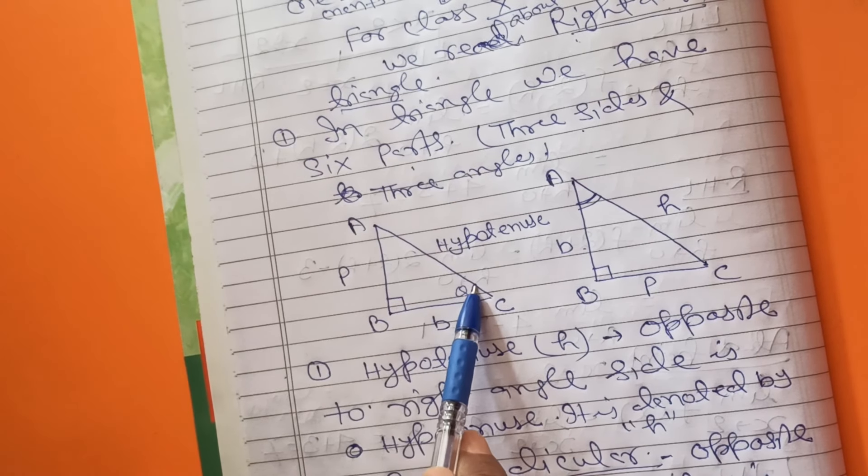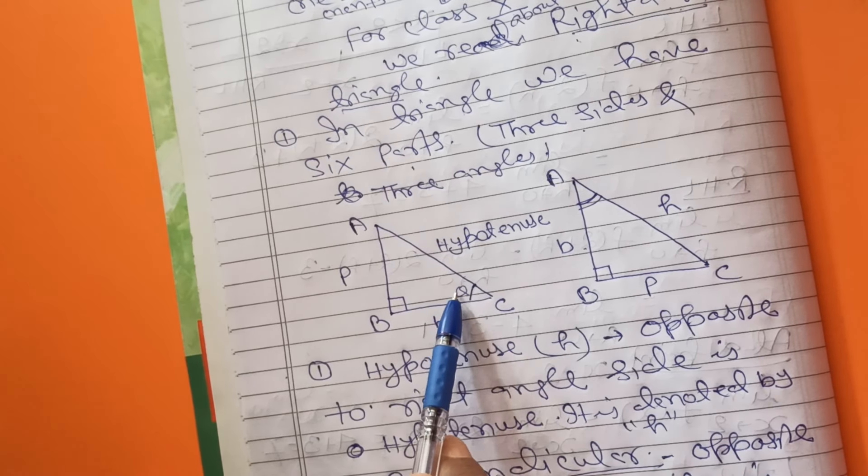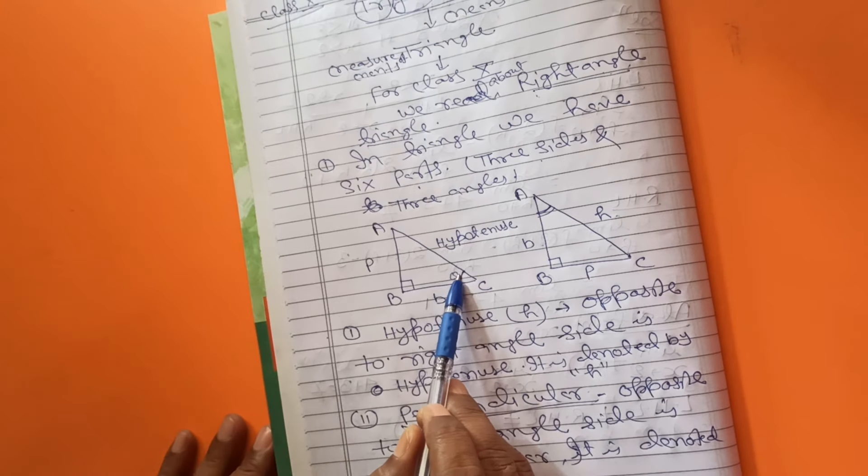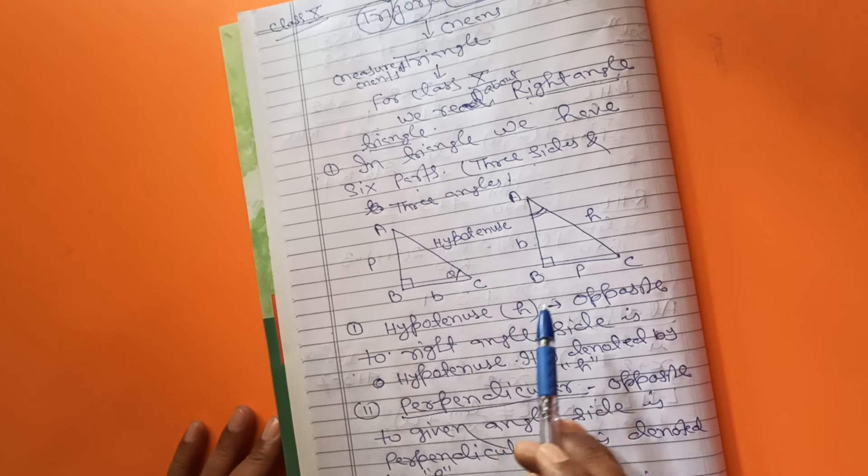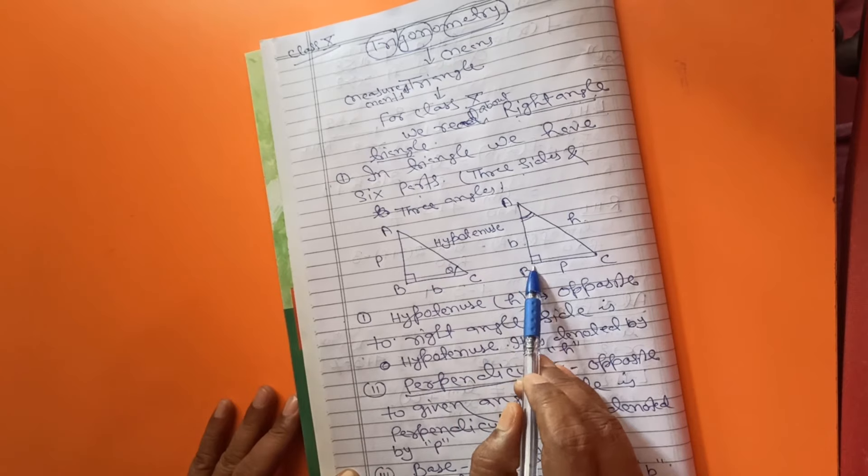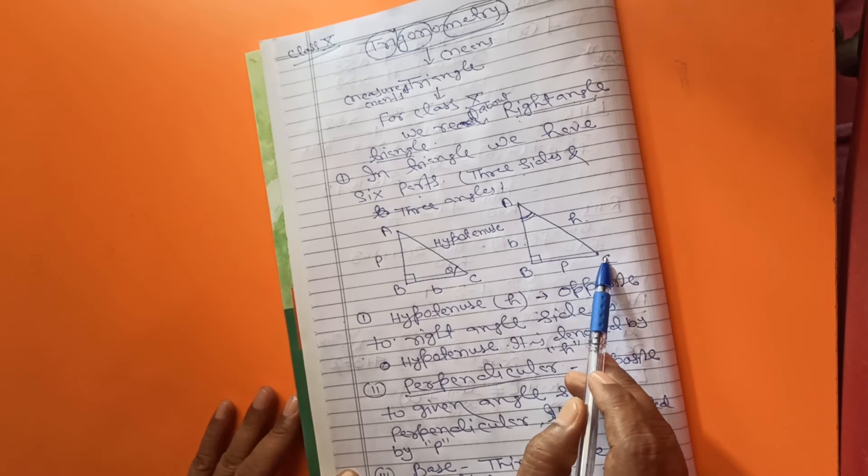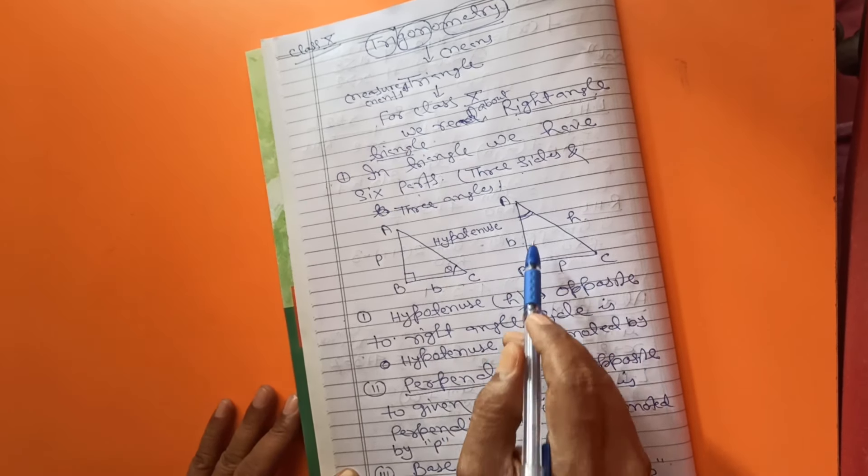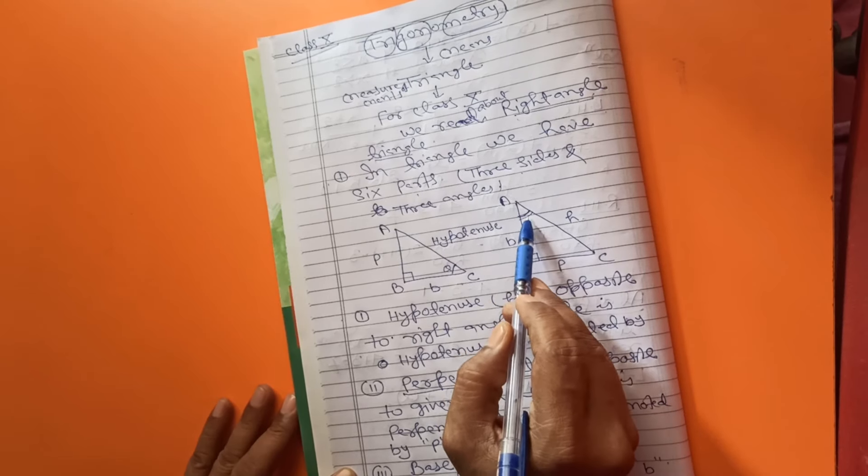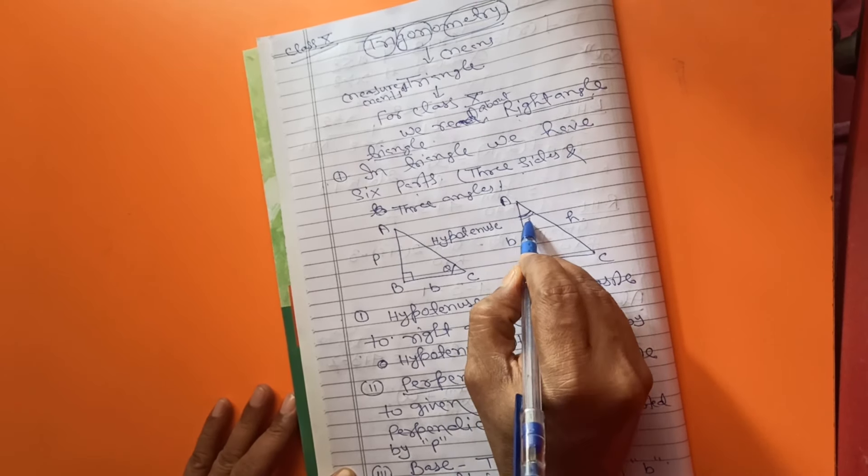Let C be the angle, which name is theta. This symbol is theta. And this is also ABC is a right angle triangle. And we have taken in this second figure, angle A. That is also called theta.